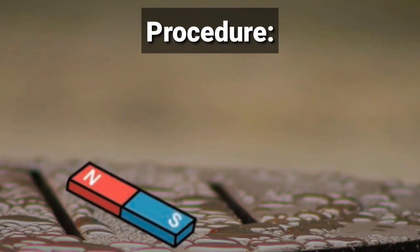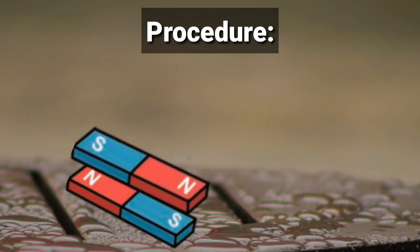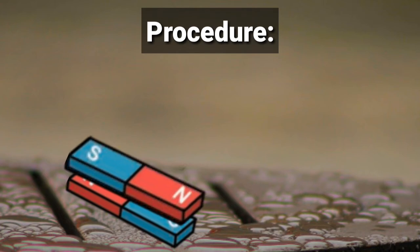The procedure to be followed is: place a bar magnet on a table in any direction, and suspend another bar magnet over it as shown on the screen. The suspended bar magnet should come close to the other bar magnet kept on the table. Observe in which direction the suspended bar magnet comes to rest.